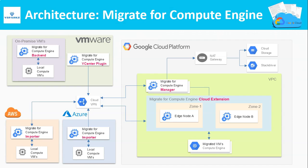This is the architecture diagram of Migrate for Compute Engine. To your left top, you can see the on-premises workloads. To your left bottom, you can see the source and destination — that's going to be our source of migration. Meaning our source can be on-premises environment, AWS Cloud and Azure Cloud. To your right, you can see the destination, and that's going to be our Google Cloud. Your source and destination is connected using a VPN.